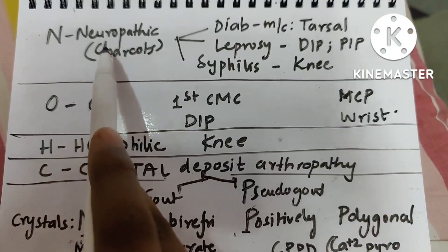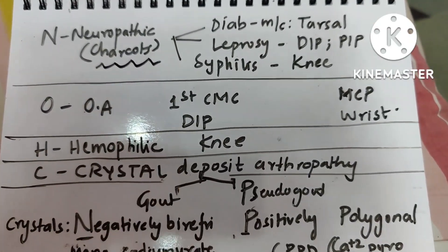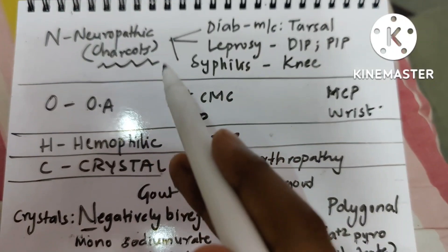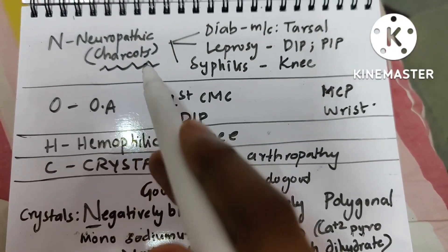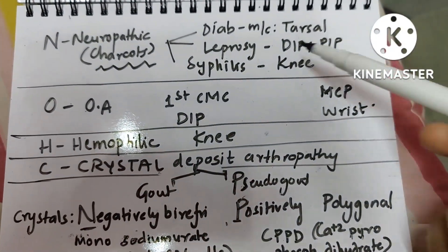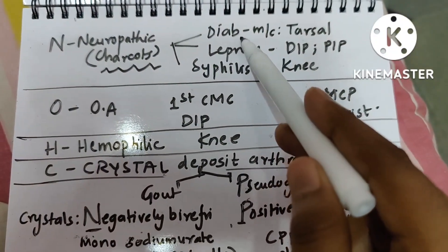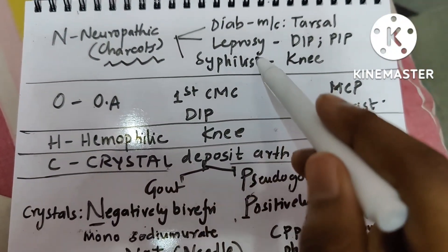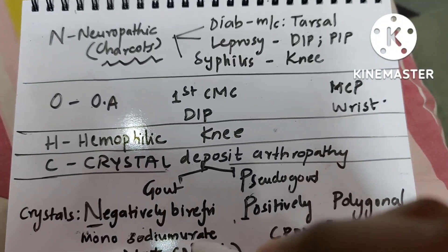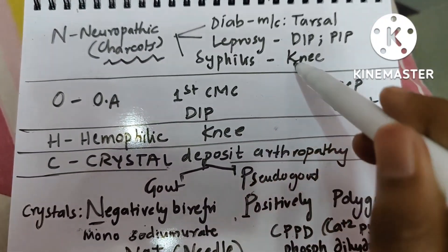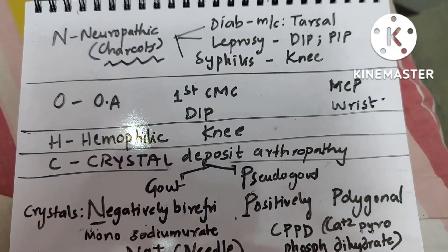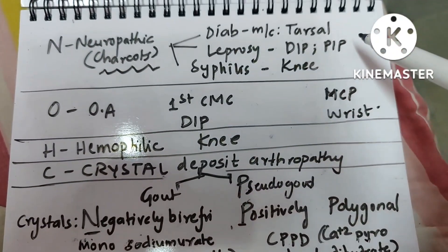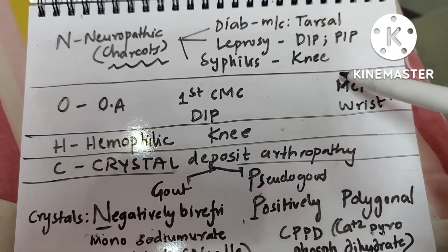Neuropathic joint is otherwise called Charcot's joint. The joints involved differ based on the underlying cause. If diabetes is the cause, the most common joint involved is the tarsal. If leprosy is the cause, DIP and PIP are involved. If syphilis is the cause, the knee joint is most commonly involved.